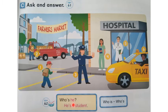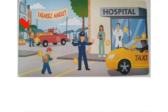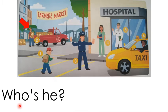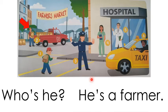Remember we use 'he' for a boy and 'she' for a girl. What about this man up here? Who's he? We say he's a farmer. He's a farmer.